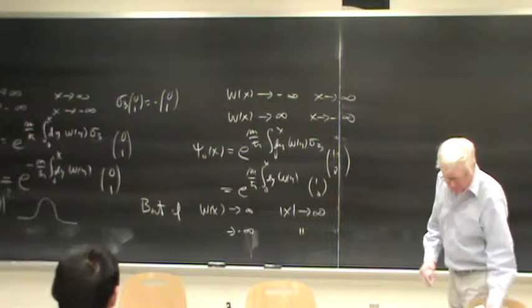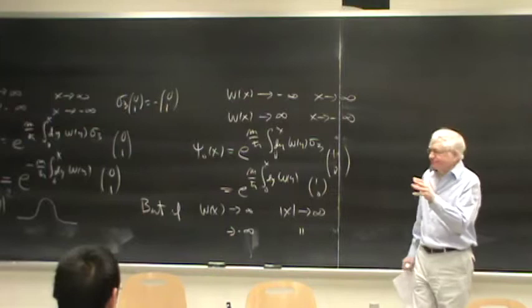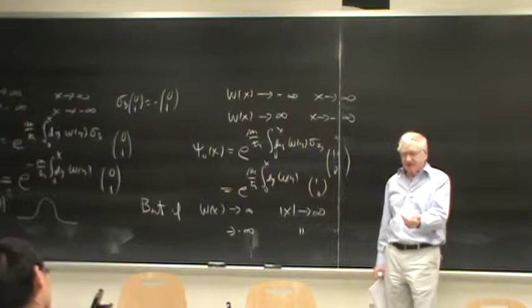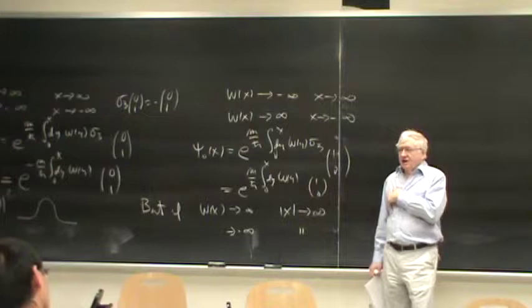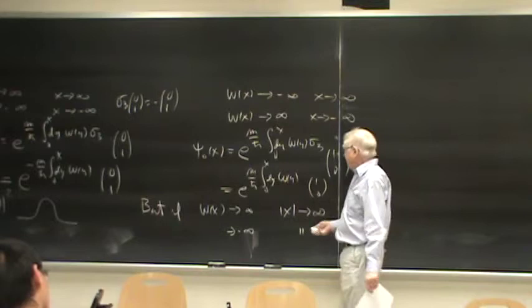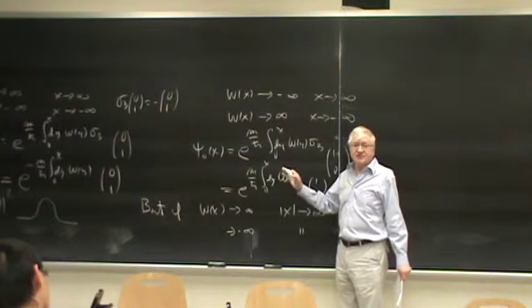Because of supersymmetry, you have the possibility of solving for the ground state by only solving a first-order differential equation. You can imagine generalizing this; we just did it for arbitrary functions W within a certain class, and found an exact form of the ground state. That's pretty amazing — if you try to find the ground state of an arbitrary potential, it's generally a numerical problem.